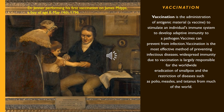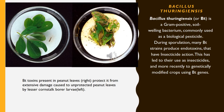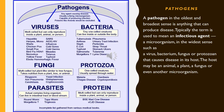Bacillus thuringiensis, or BT, is a gram-positive, soil-dwelling bacterium commonly used as a biological pesticide. During sporulation, many BT strains produce endotoxins that have insecticidal action. This has led to their use as insecticides and, more recently, to genetically modified crops using BT genes.